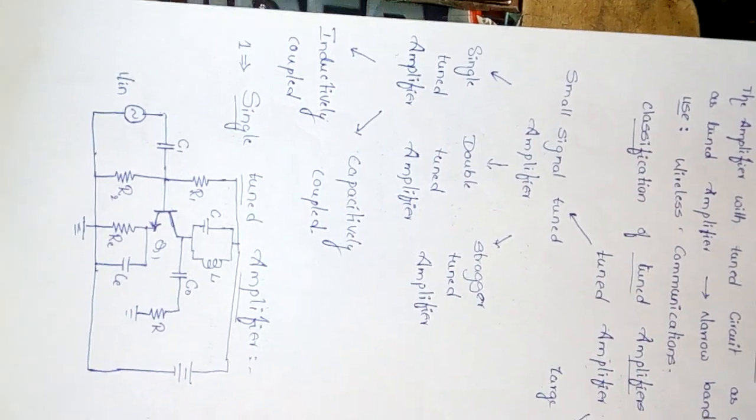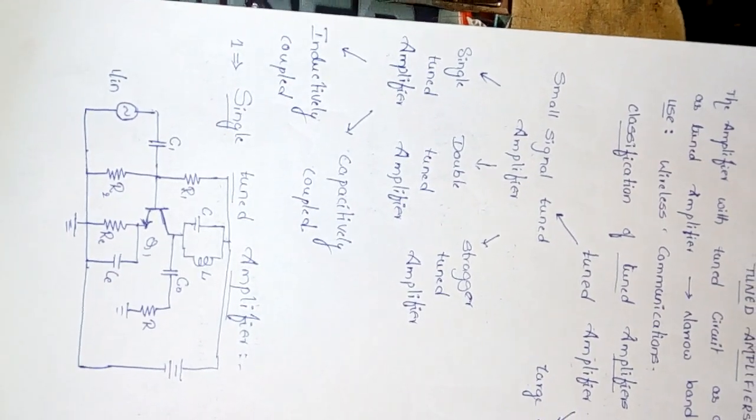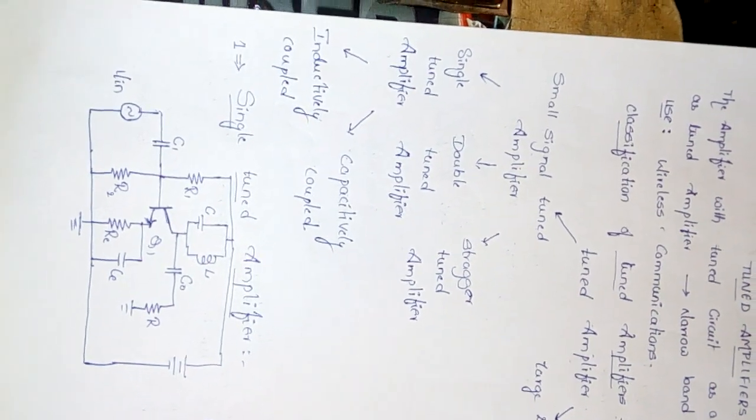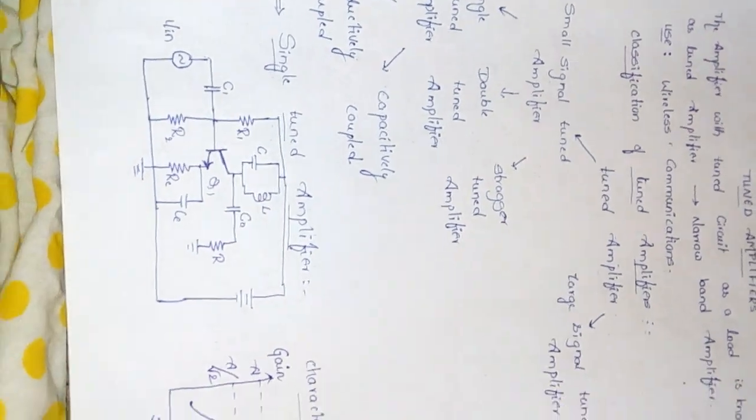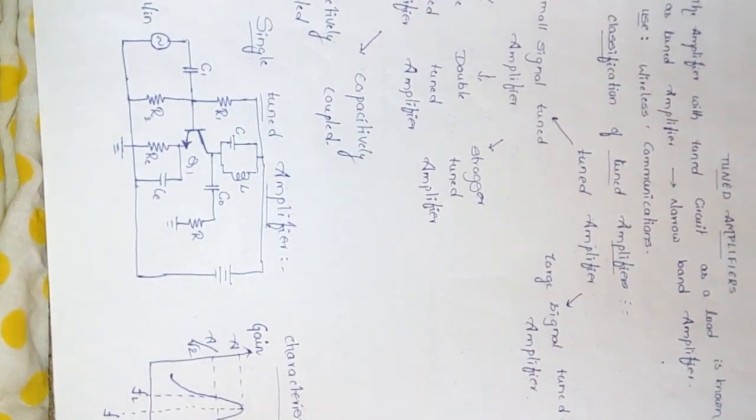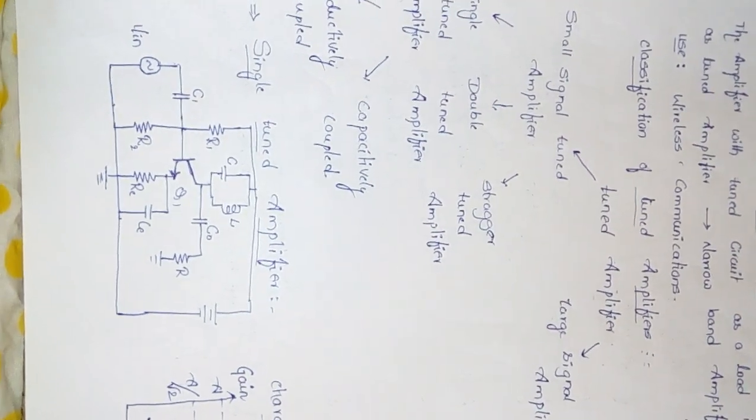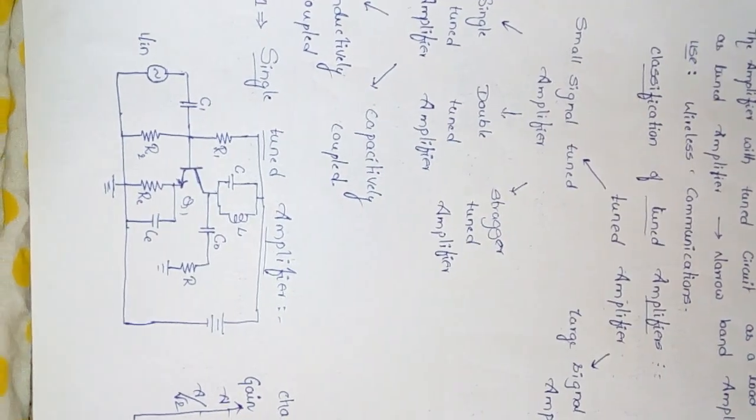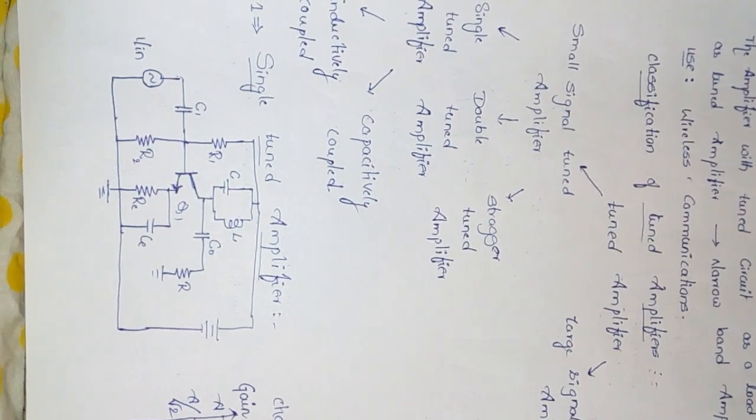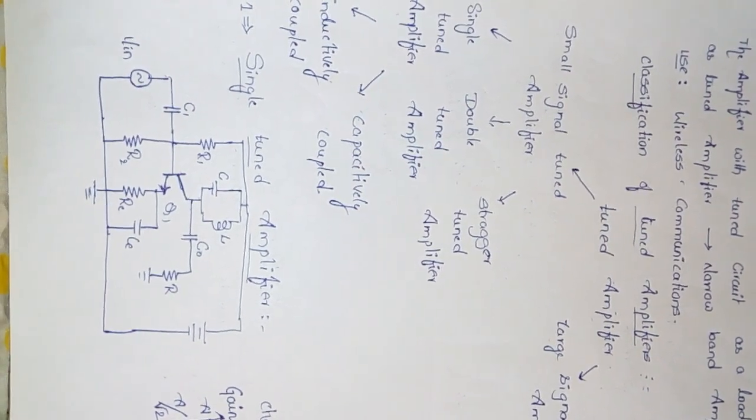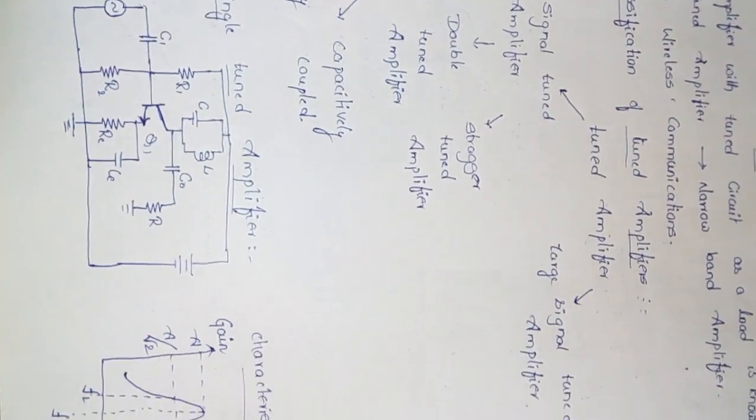This small signal tuned amplifier is again classified into single tuned amplifier, double tuned amplifier, and stagger tuned amplifier. This single tuned amplifier is again classified into two types: inductively coupled and capacitively coupled single tuned amplifier.